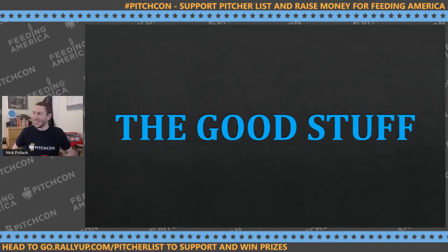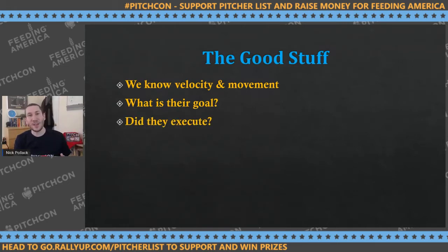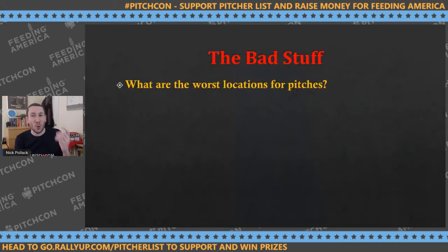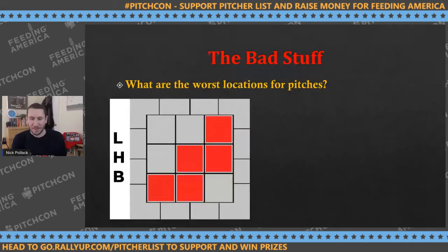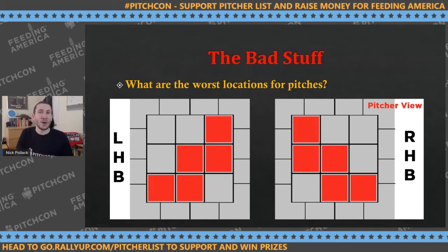Now for the good stuff — intent and what pitchers are trying to do on every at-bat. What is the pitcher's goal? Did they execute it? And what comes next based on what just happened? This is the best part of baseball. Let's start with bad locations. For a right-handed pitcher versus a left-handed batter, the red boxes — where you generally don't want to throw — are in spots where the batter can extend the bat and get their arms out. The barrel naturally goes through the down-and-in corner.